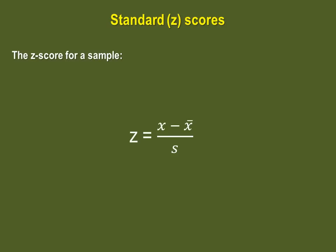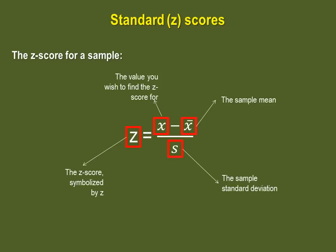This is where the z-score comes in. We obtain the z-score by subtracting the mean from the value and dividing the result by the standard deviation. Here is the formula for the z-score when the distribution we have is the sample. So first we have the z-score, which is symbolized by z. Then we have the value you wish to find the z-score for, the sample mean, and the sample standard deviation.